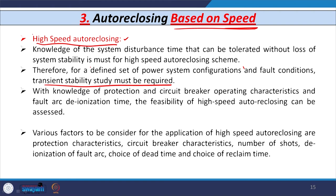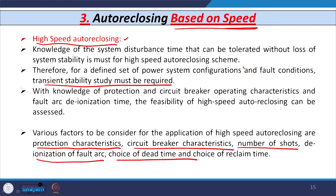Factors to consider for high-speed auto reclosing include: protection characteristics, circuit breaker characteristics, the number of shots (single or multiple reclosing attempts), deionization time of the fault arc, and the choice of dead time and reclaim time.